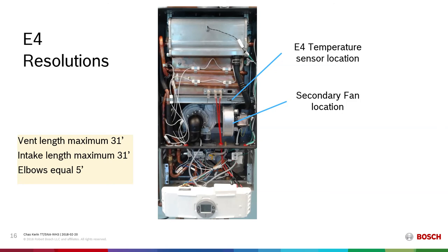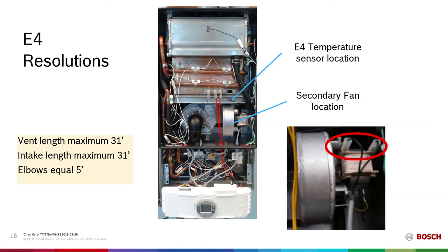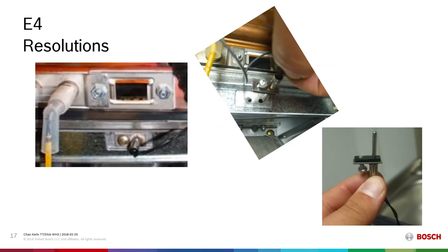Note the temperature sensor location for E4 and the location of the secondary fan. The secondary fan draws air in, but that air is not part of the combustion process. Note the location of the power connections for the secondary fan — if these are disconnected, the fan will not turn. The E4 sensor electrode set is located just below the sight glass. It is held in place with one machine screw. Removing that NTC thermistor and ensuring that it is clean and undamaged is a very valid resolution.